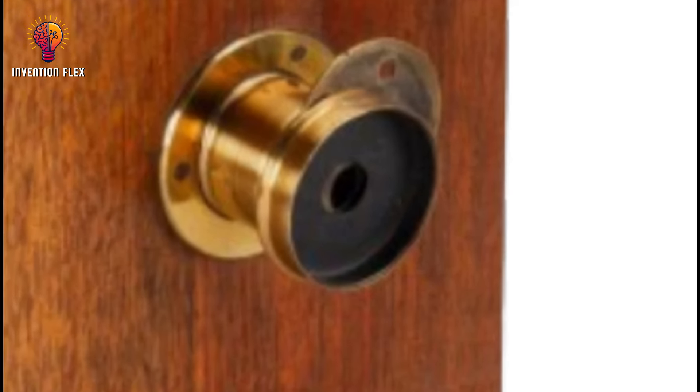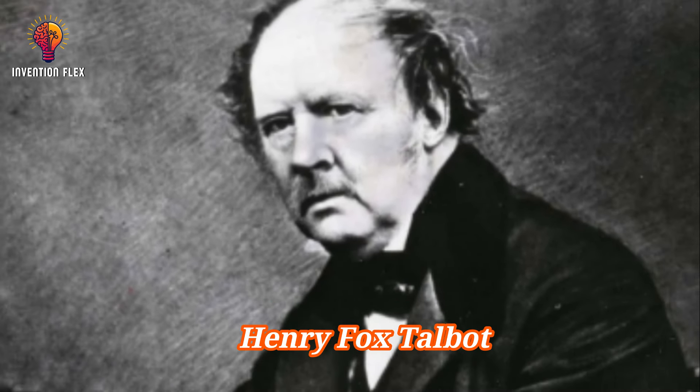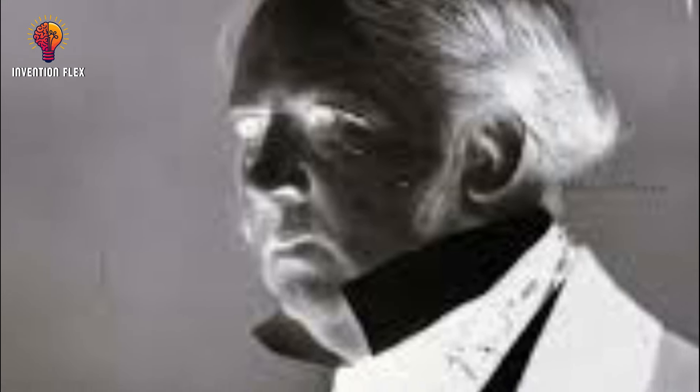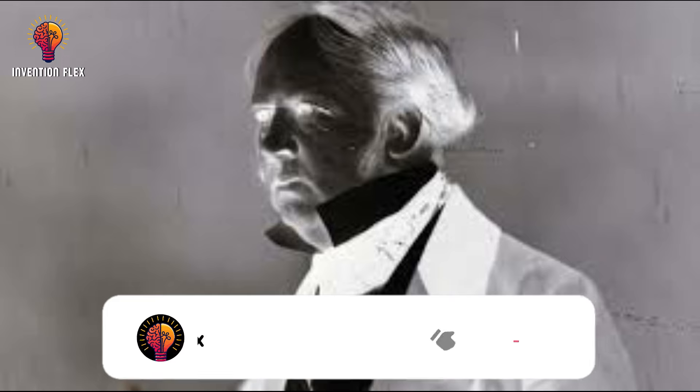Also in 1839, Henry Fox Talbot presented something called a film. Instead of using daguerreotype plates, he used writing paper soaked in table salt and covered in silver nitrate. The photographs were blurrier than those made by a daguerreotype, and the method, called calotype, didn't catch the public's attention. Nevertheless, it was the first mention of a photographic film and the first step toward using paper instead of plates.